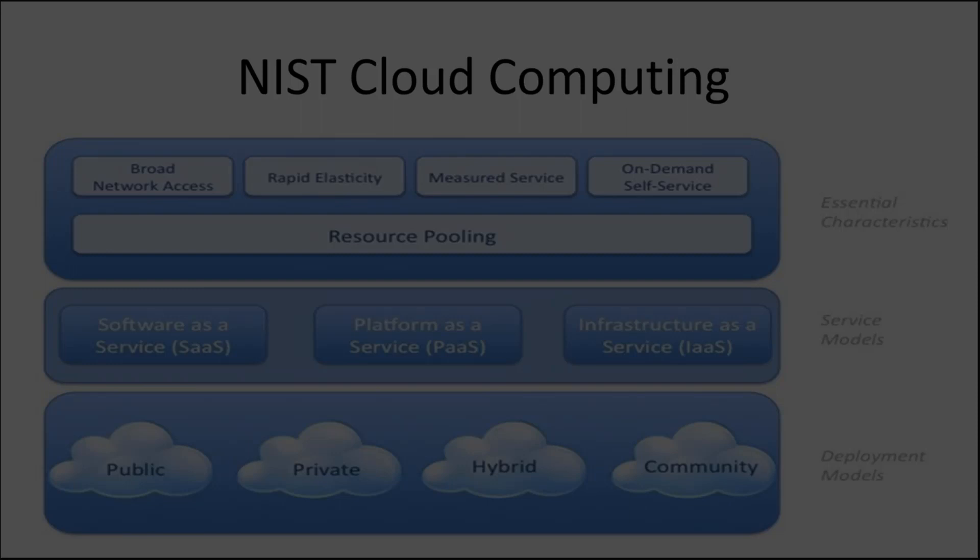Rapid elasticity is really focused around whether you are able to deploy a service and also address the requirements of that service. If there's a significant surge in demand, are you able to scale up as needed? And if you no longer need all those VMs or that storage, you should be able to scale down as needed. That is essentially rapid elasticity.